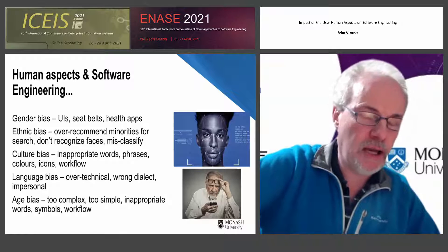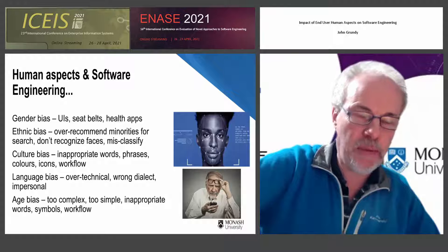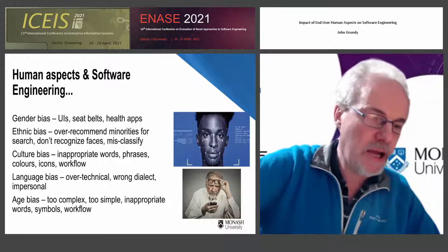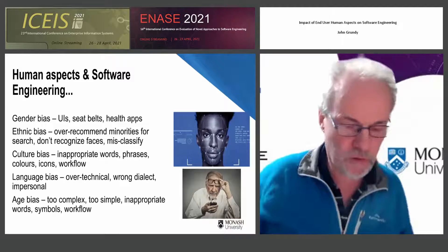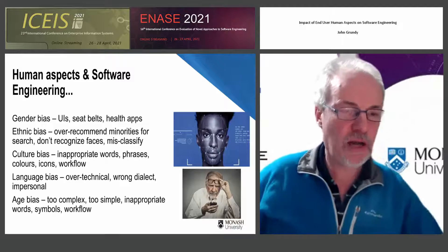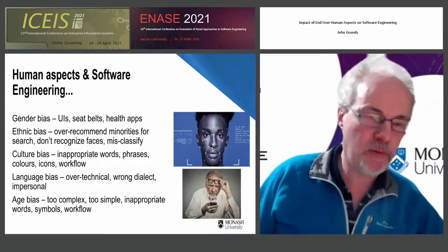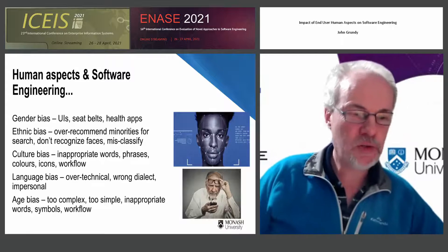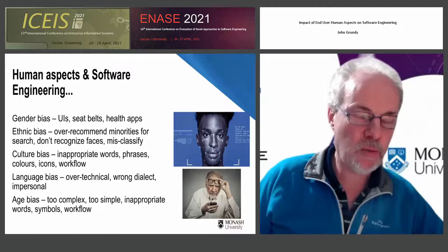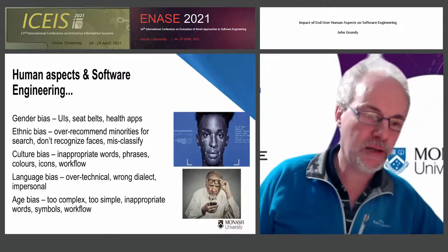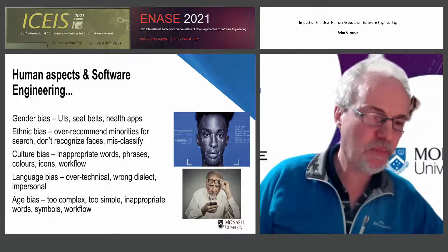When Apple released their health app, Apple Health, it didn't have any support for tracking menstrual cycles. Why was this missing from a health app you'd think you'd want to use it for? Well, were there no women in the development team?